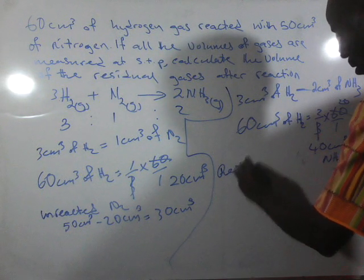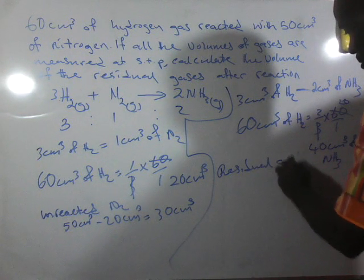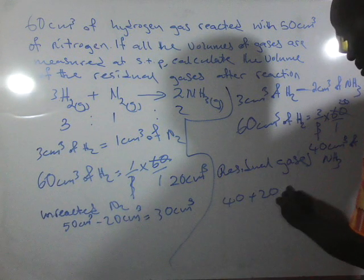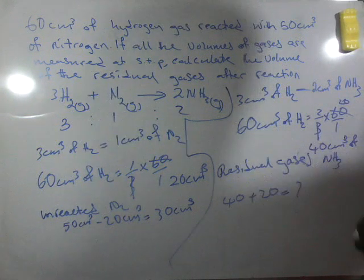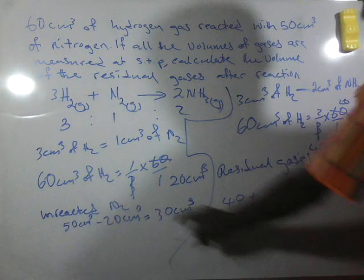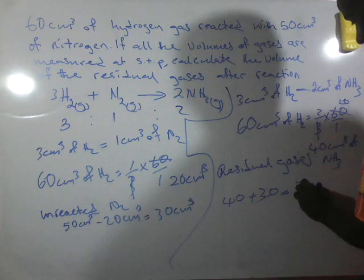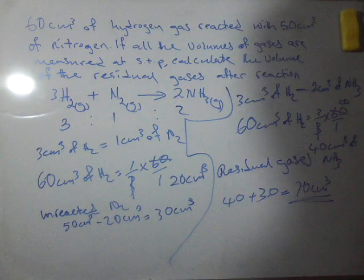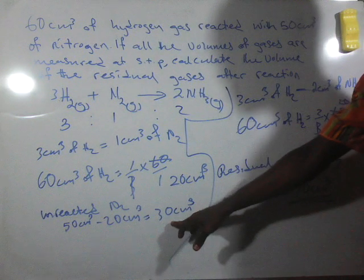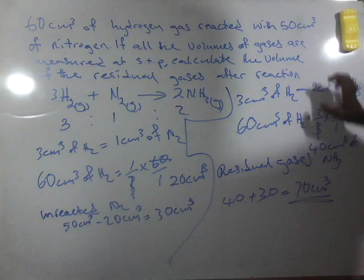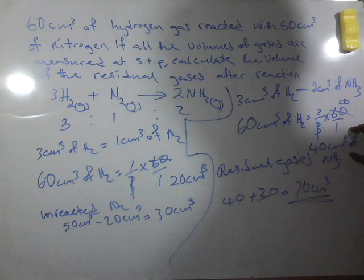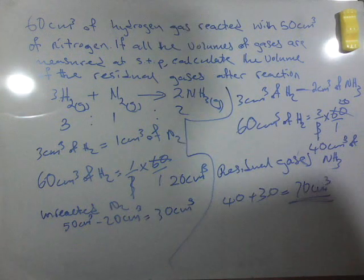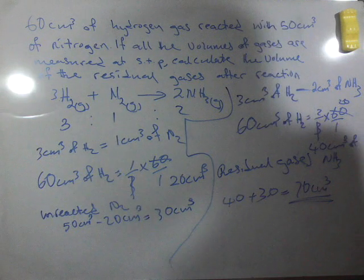The residual gas will be 40 plus 30, that will give us 70 cm³. That is the residual nitrogen and 40 cm³ of ammonia gas produced, that will give us 70 cm³. That is the residual gas after the reaction. Thank you so much for watching.